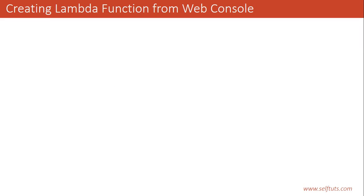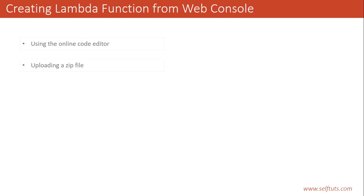There are basically two ways to create a Lambda function from the web console. The first one is using the online code editor which AWS provides, and the second one is uploading a zip file. We have already seen in our previous videos that we were using this online code editor. In this video, we will review the online code editor and then see how to create new Lambda functions using a zip file.